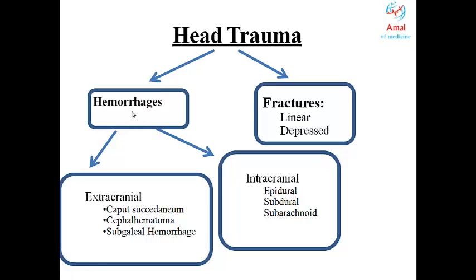Hemorrhages can be divided into two subcategories: extracranial hemorrhages or intracranial hemorrhages. Extracranial hemorrhages include three types: caput succedaneum, cephalohematoma, or subgaleal hemorrhage. Intracranial hemorrhages include epidural, subdural, and subarachnoid.